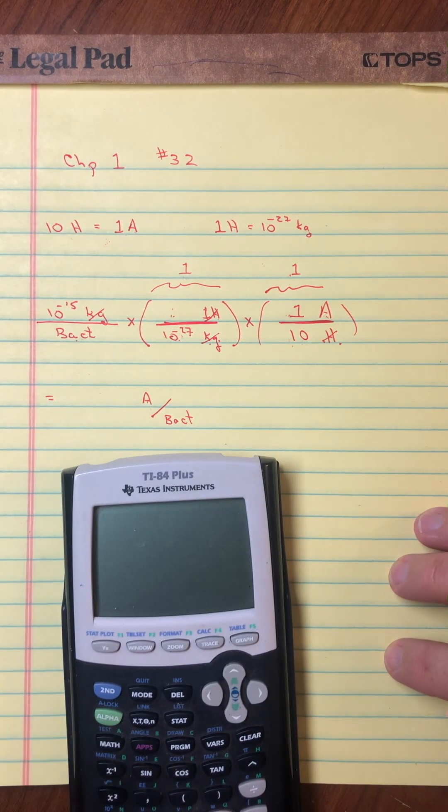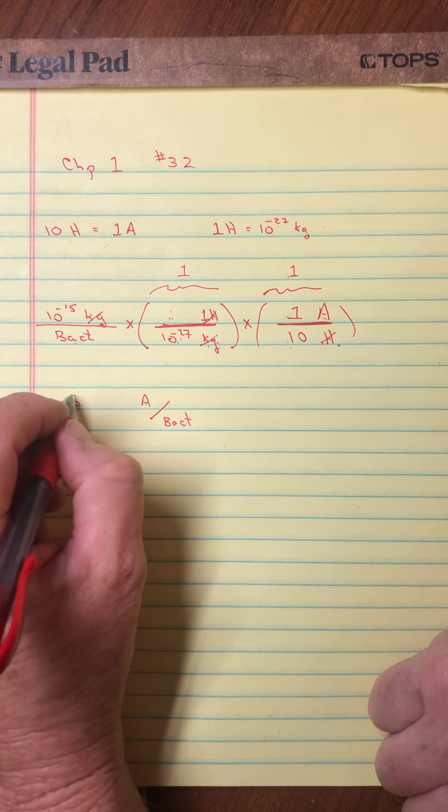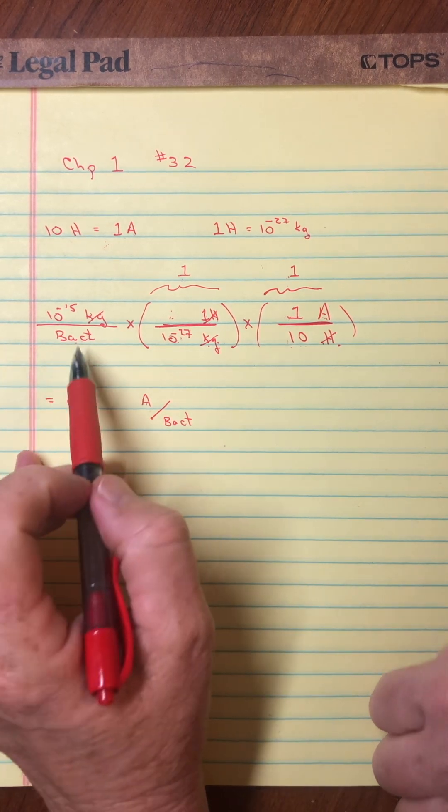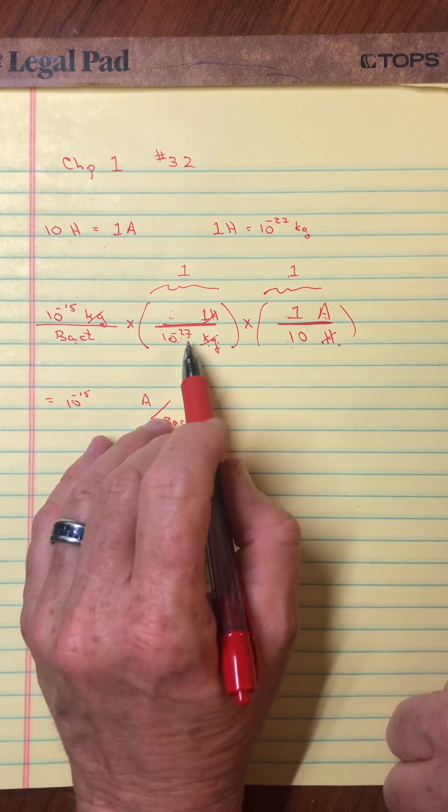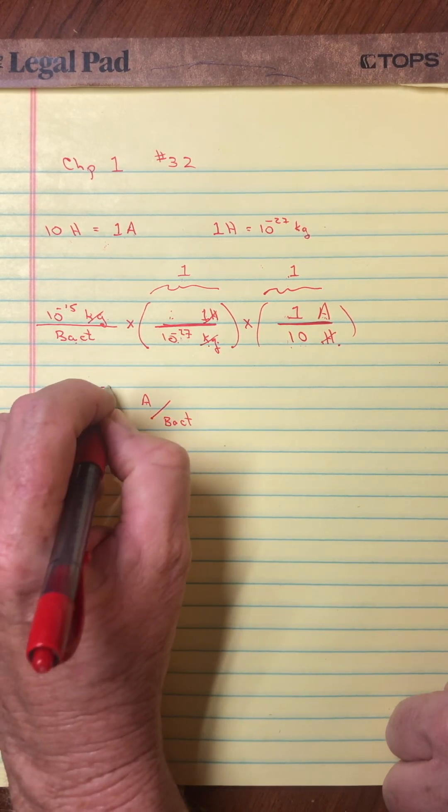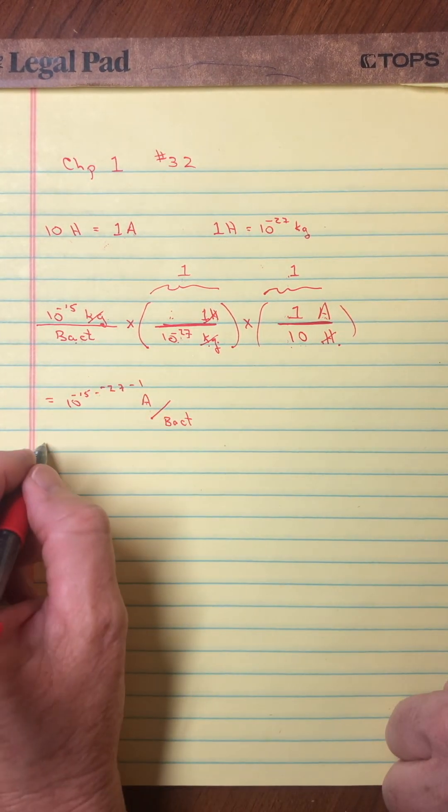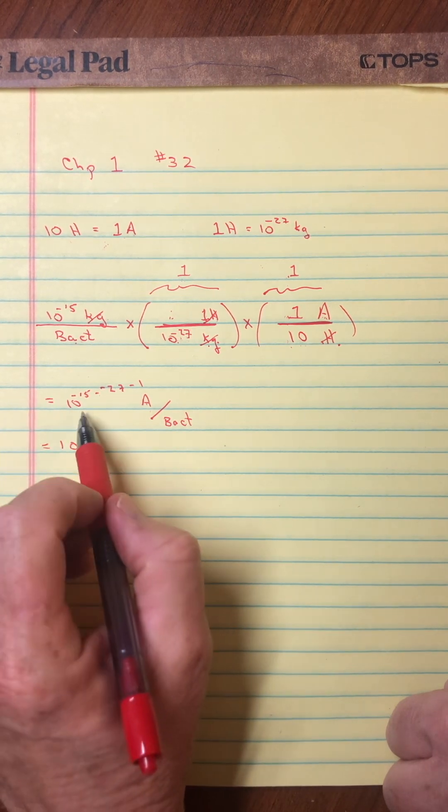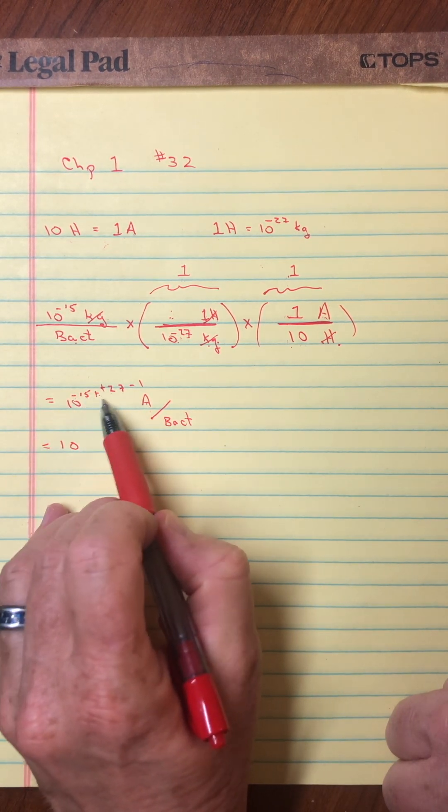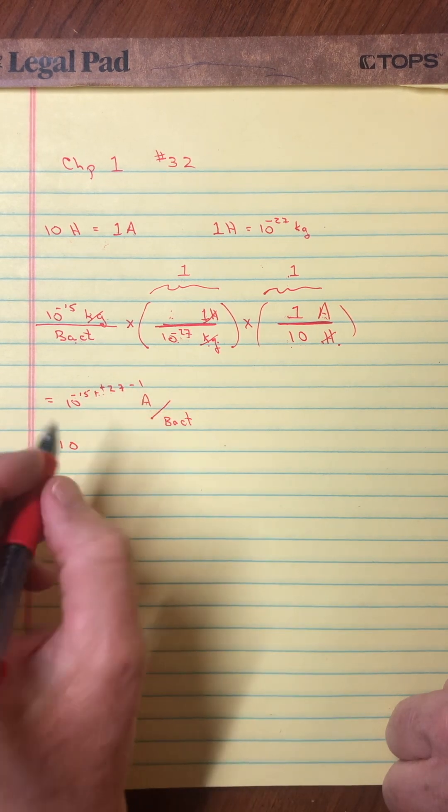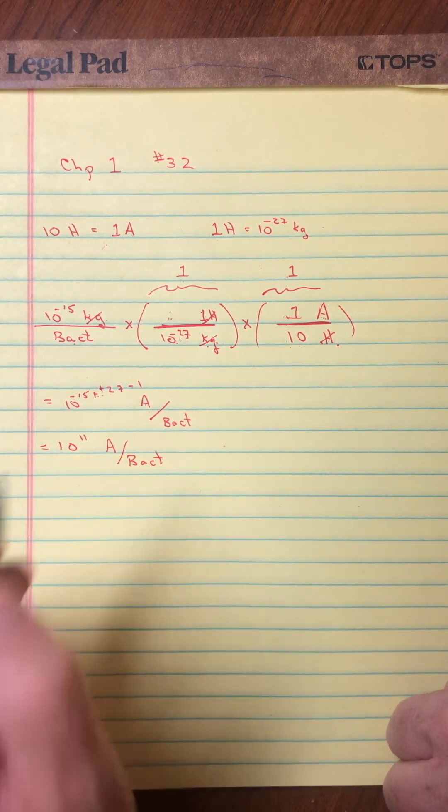To finish the problem, let me get out my calculator. Actually, I don't really need a calculator for that. I'll just remind you of a little mathematics. This is 10 to the minus 15. If you remember, when you multiply exponents, you add them together, and when you divide, you subtract. So this would be minus a negative 27, and then I'm dividing by a 10, so that would be minus a 1. Let's see here. The two negatives here make a positive. So the 27 and the negative 15 make a positive 12 minus a 1 make a positive 11. So it'd be 10 to the 11 average atoms per bacterium. Nice.